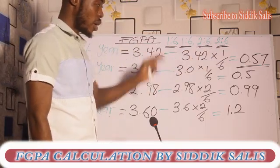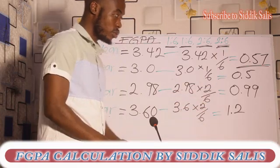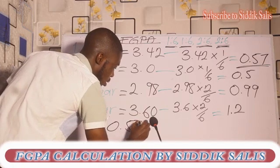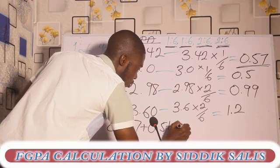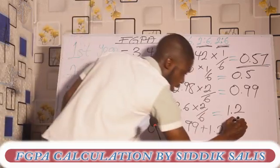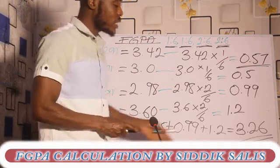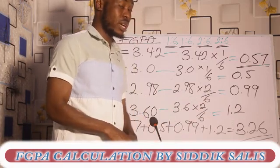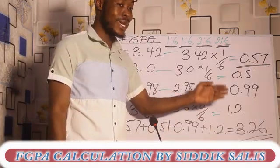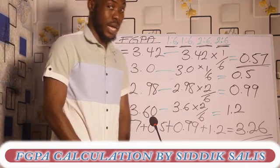In the end, you sum up everything across all years: 0.57 plus 0.5 plus 0.99 plus 1.2. That gives us 3.26 as our final GPA. According to the current 2020-2021 grading system and divisions, this falls under second class upper division.